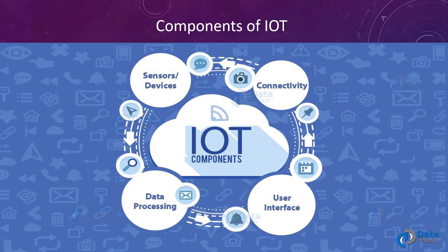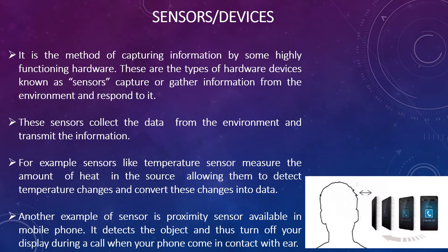Just like human beings have components such as your physical body, hands, legs, senses, and how we process and digest food, likewise in the Internet of Things we have certain components. These are: sensors or devices, data processing, user interface, and connectivity. Let's discuss each of these components of IoT in detail.